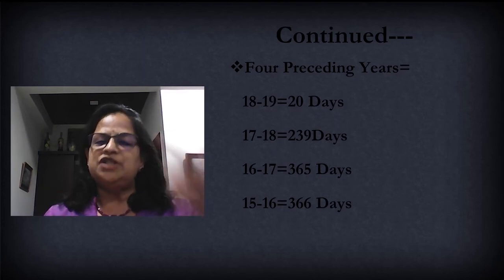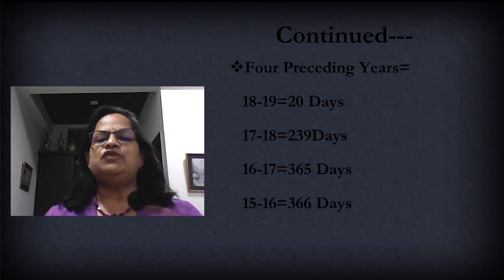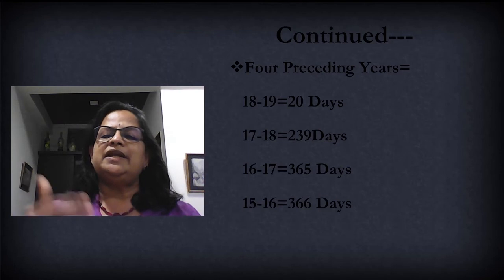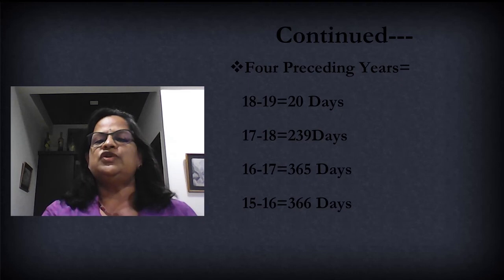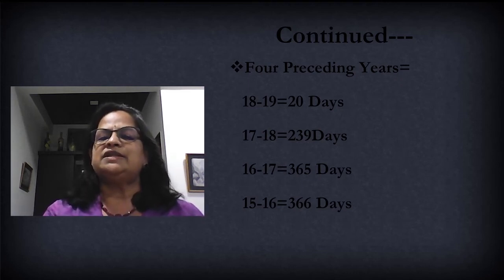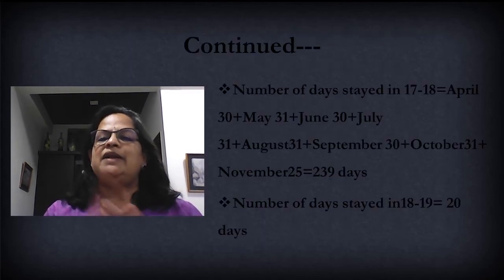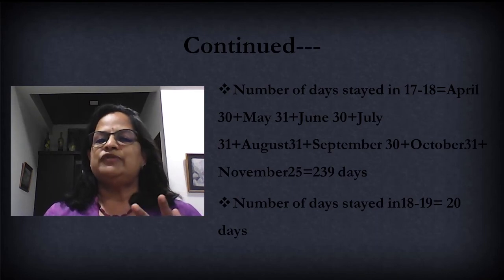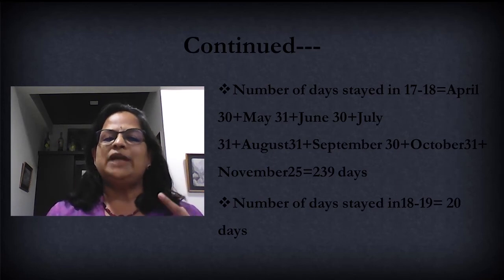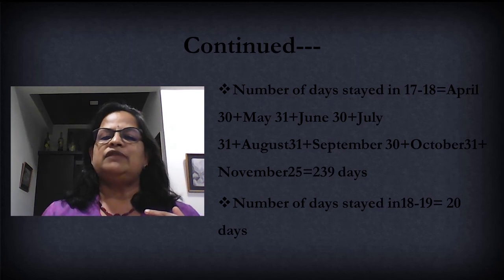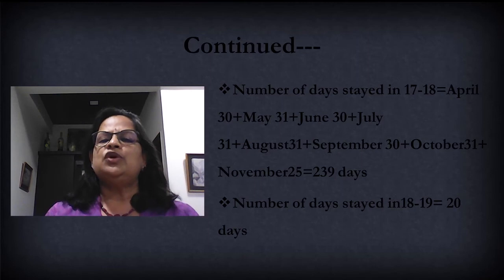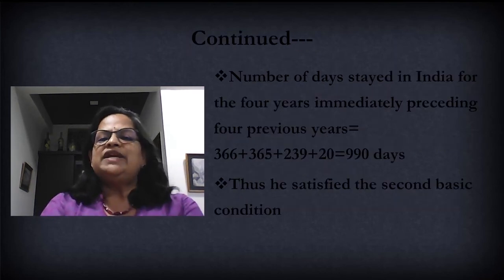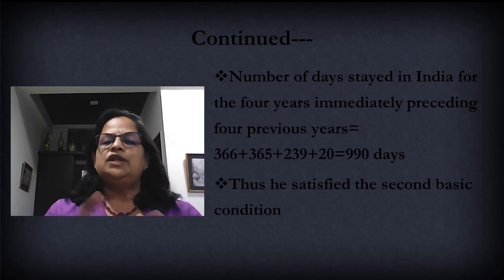For 2018–19, the days are directly given in the question. For 2017–18, 239 days — calculated as April to November 25th: April 13 days, May 31, June 30, July 31, August 31, September 30, October 31, and November 25 (day of leaving is counted), giving 239 days. For 2016–17, he was there the full year — 365 days. For 2015–16, it was a leap year — 366 days. For 2018–19, the stay is directly given as 20 days.